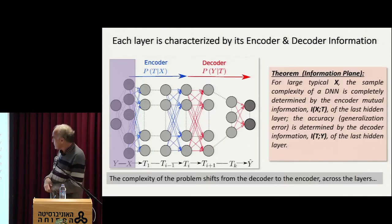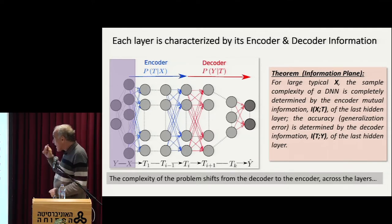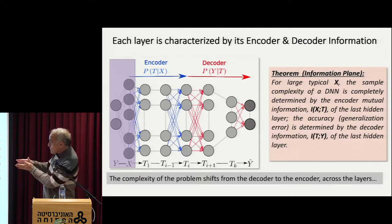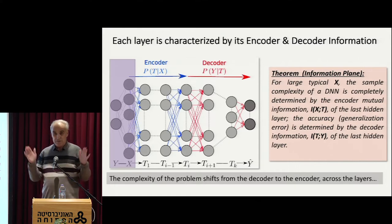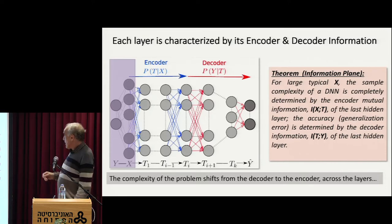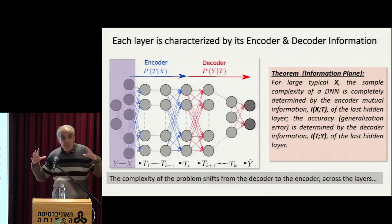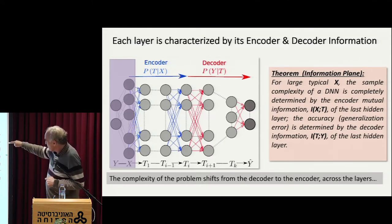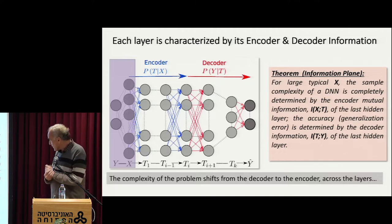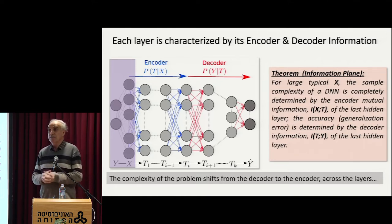I'm going to talk mostly about the information of the encoder of the layer and the information of the optimal decoder of the layer. And essentially I have this theorem. When the problem gets large, such that I can focus on typical patterns, only two numbers really matter. So out of those millions of parameters, all the weights — when you talk about large problems, it's only the information of the encoder IXT of each layer, and the information of the optimal decoder ITY, which are going to tell me the story I'm really interested in.